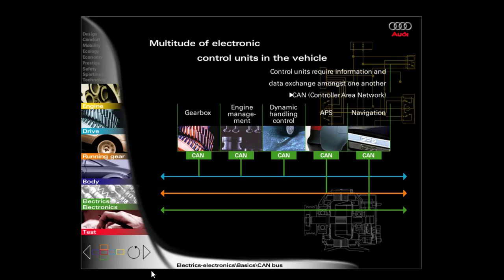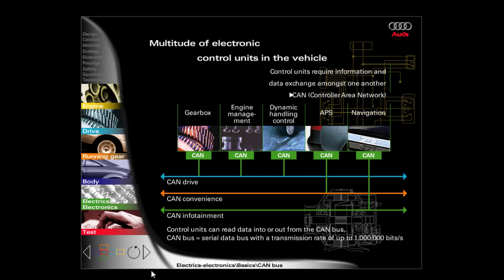CAN stands for Controller Area Network. Three CAN buses exist at Audi: the CAN drive, the CAN convenience and the CAN display. Each CAN bus is a collective lead. The control units are able to read data into or out from this collective lead. The CAN bus is a serial data bus which is able to transmit up to one million bits per second, which corresponds to approximately 30 A4 pages.